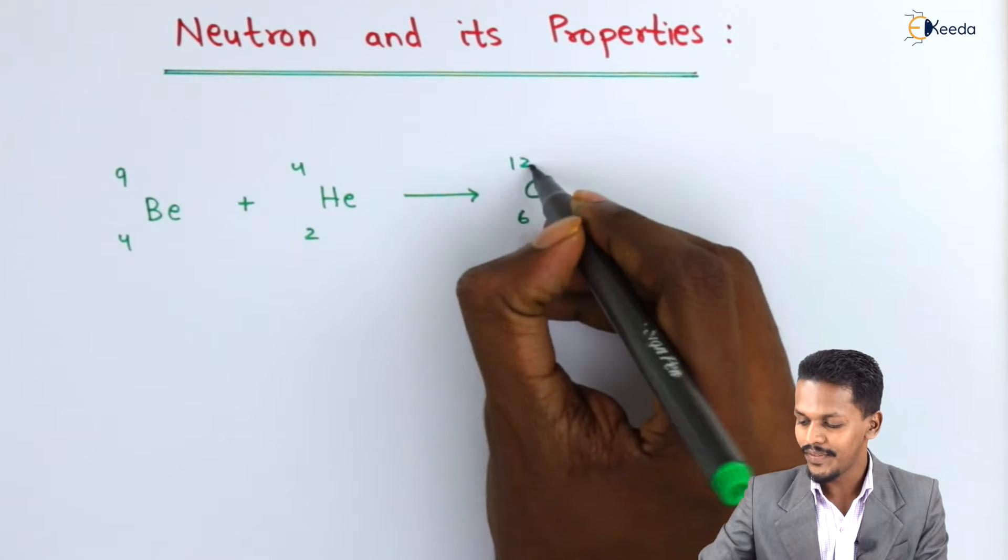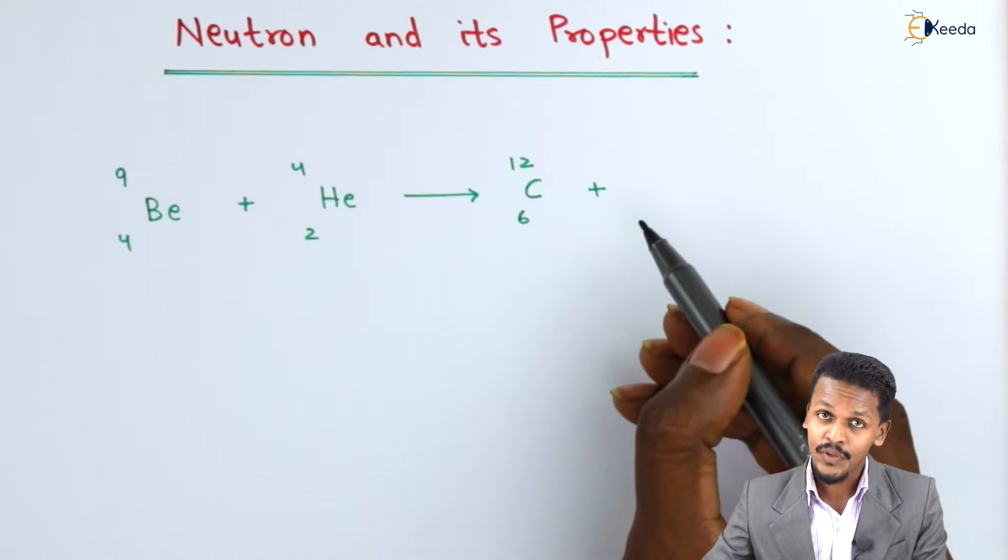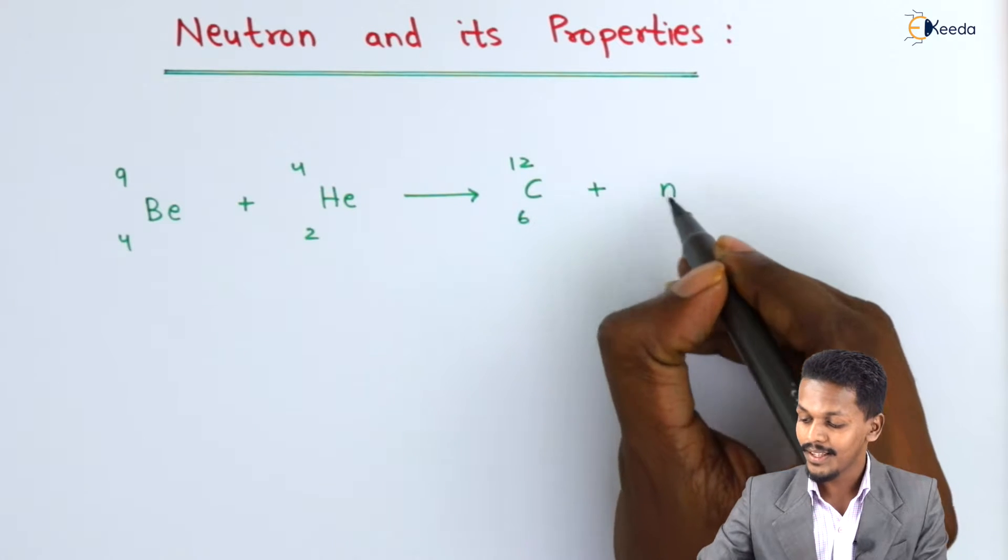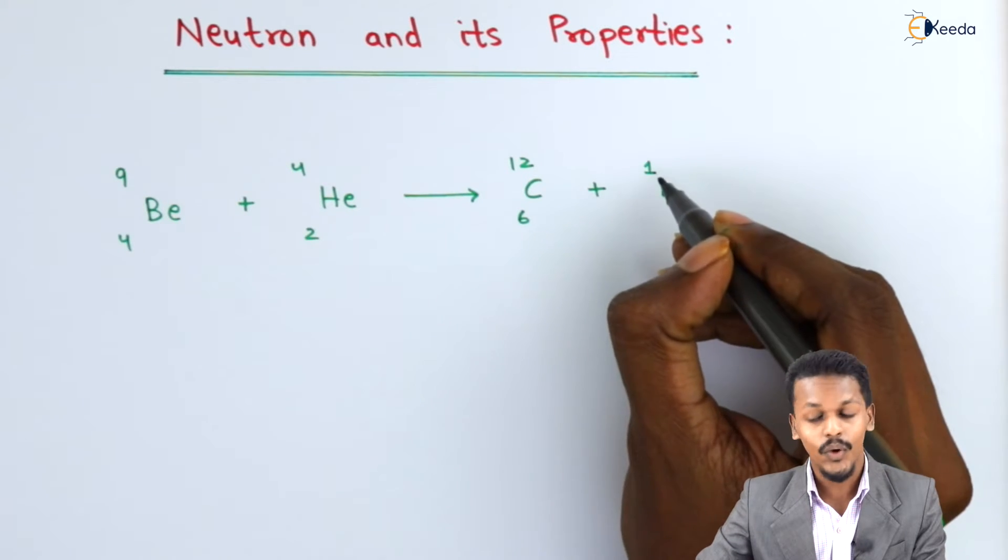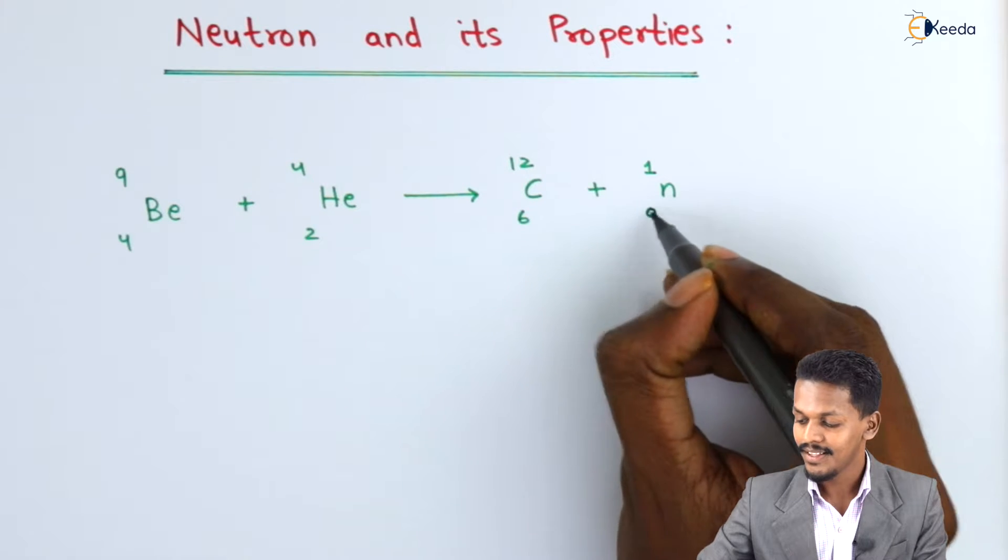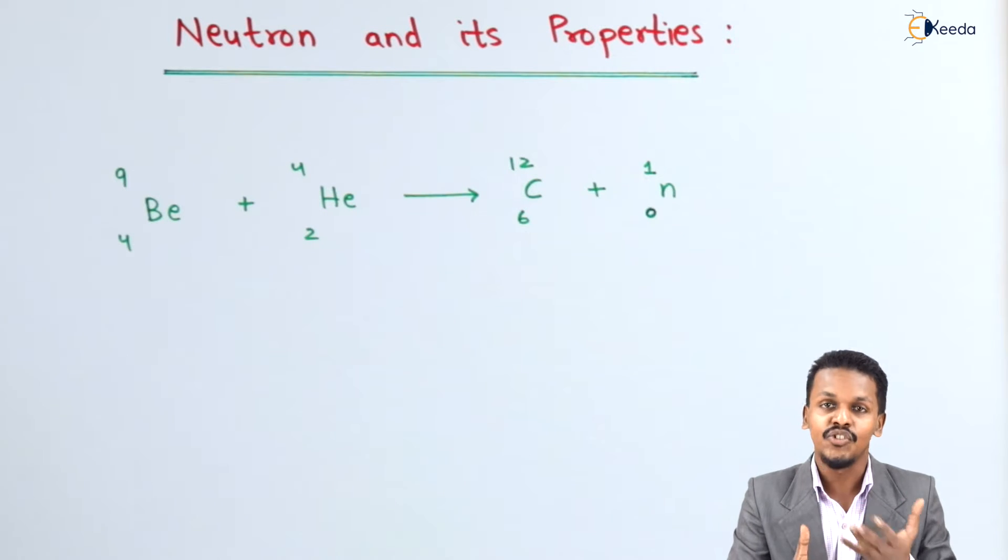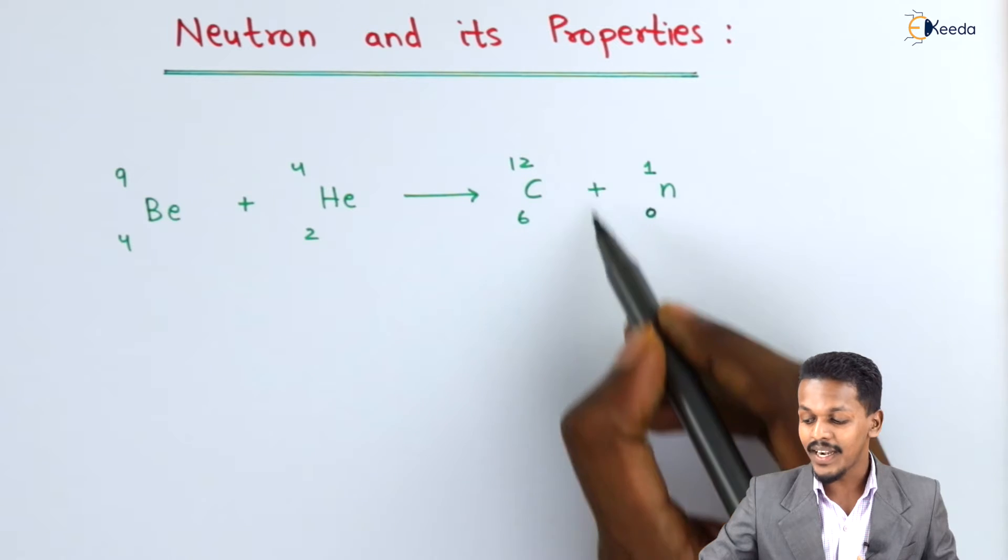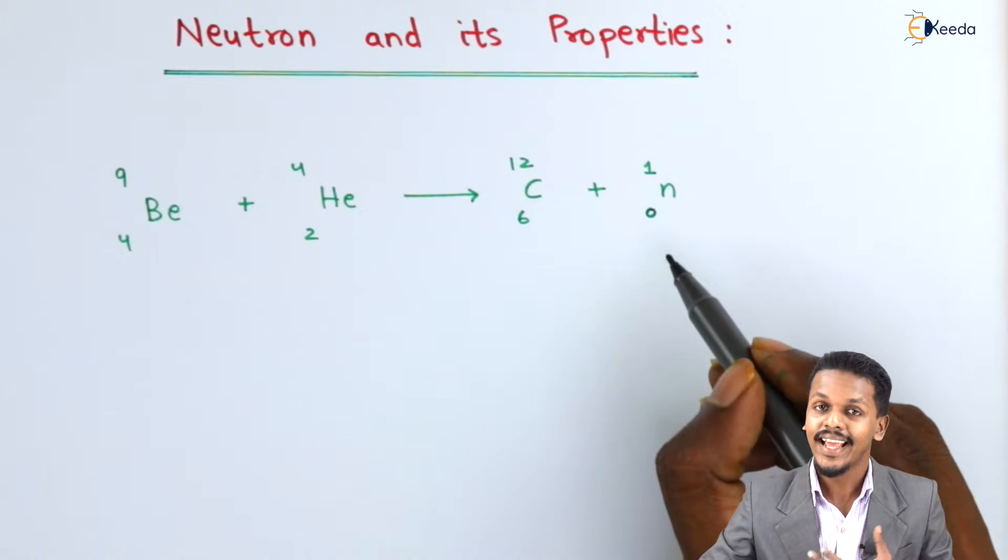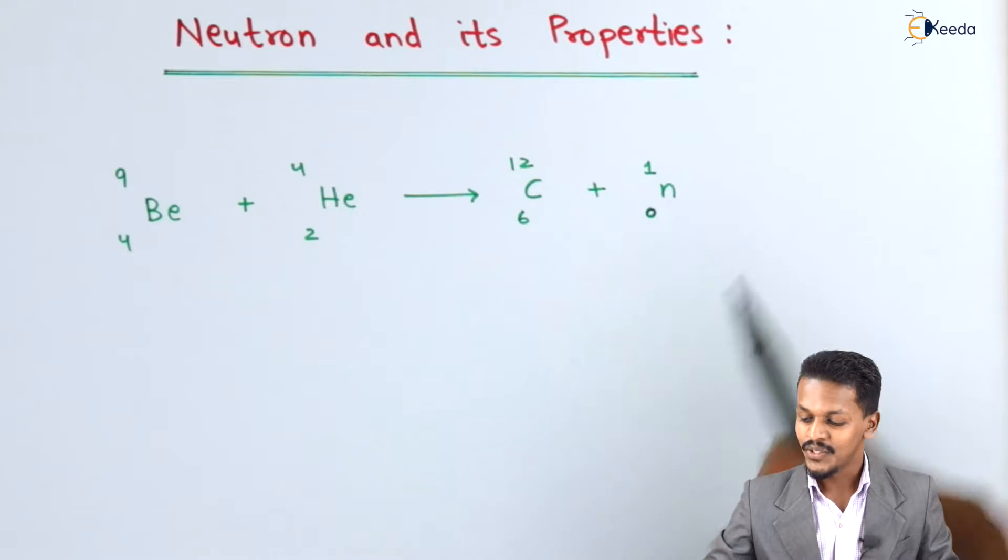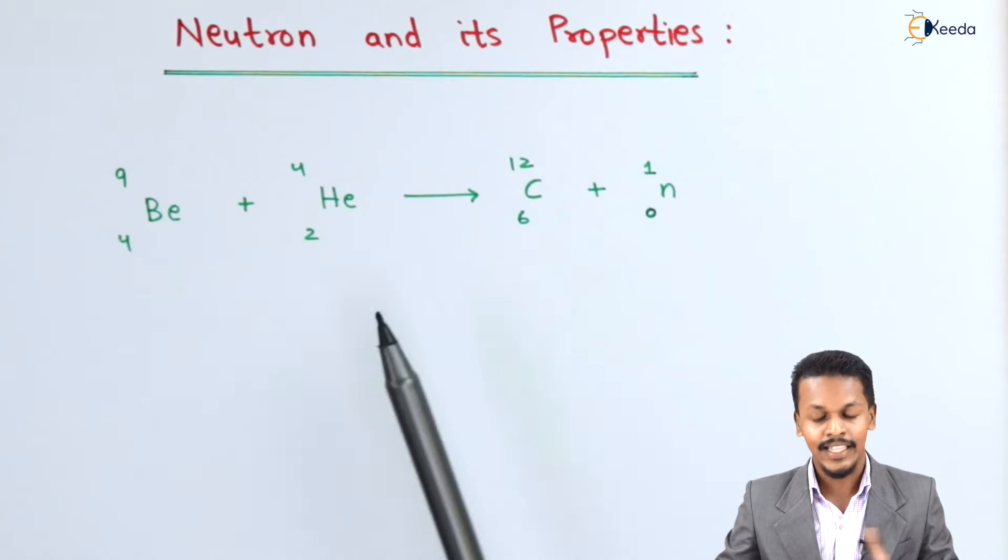The other particle produced here has a mass of 1, and since it doesn't carry any charge, its charge is 0. This particle is known as the neutron.